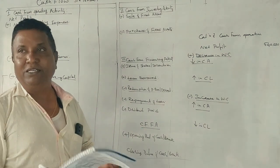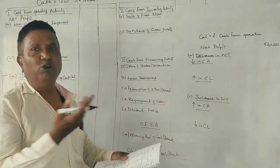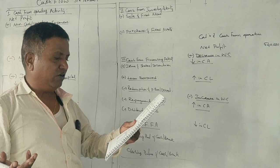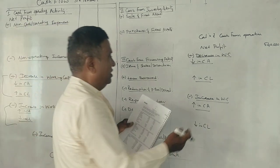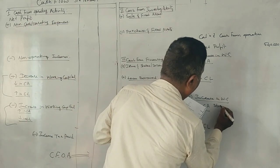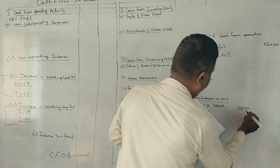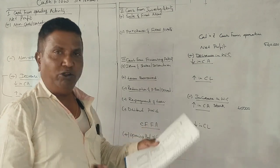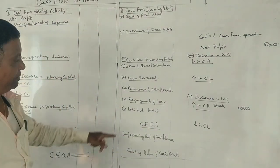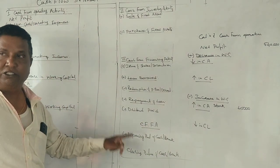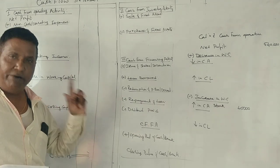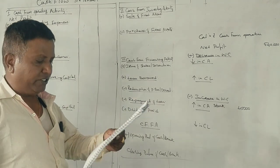Stock increased by 45,000. An increase in stock means cash outflow, so we subtract this. Next, debtors decreased by 30,000. A decrease in debtors means cash collected, so we add this.